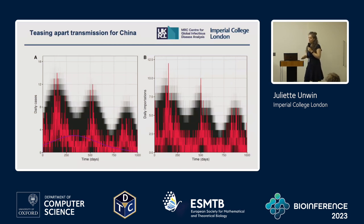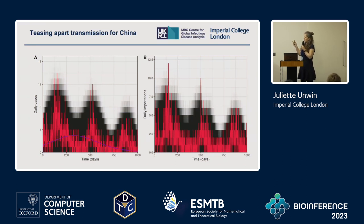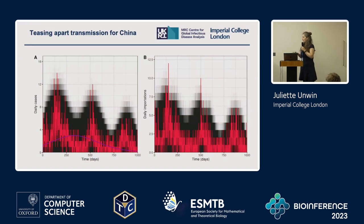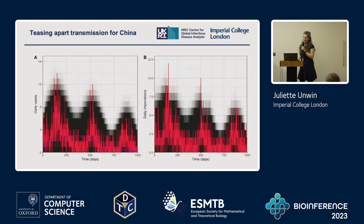We found that with this method we were really able to tease apart what was driving transmission. Here's an example for China: on the left are the daily cases and on the right are the daily importations. We didn't fit to importations—we just fit to the time series of data. You can see the shapes are very similar because most cases were being driven by importations, but the magnitude is slightly different. The red line is our raw data and the black lines are 10,000 simulations from our Hawkes process.